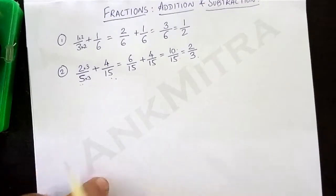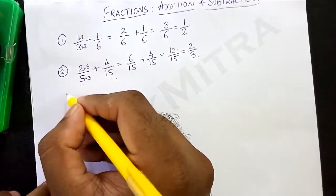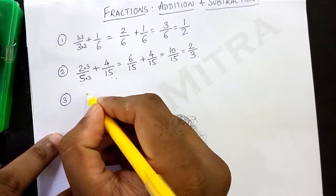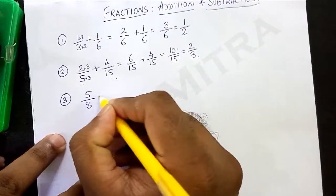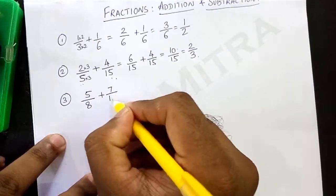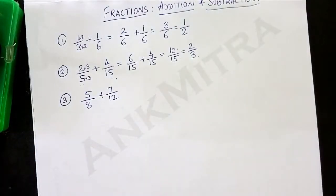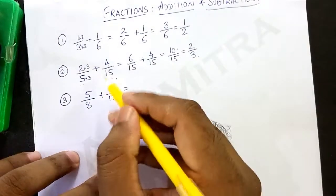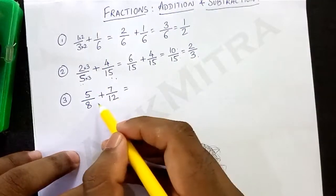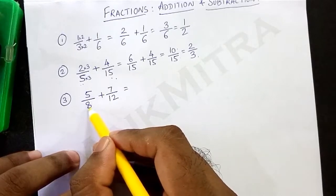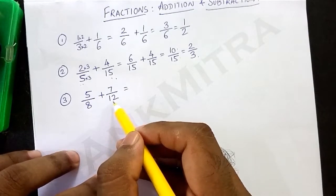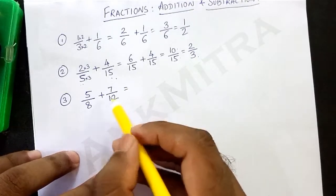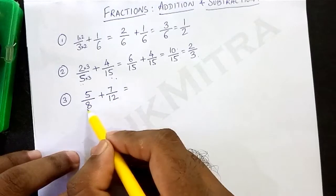Now let us look at another example. Let us say we are supposed to add 5 upon 8 plus 7 upon 12. In this case it is slightly different. The denominators are different for sure, and the table of 8 does not have 12 in it. So what we need to do is find the LCM — the least common multiple — of 8 and 12.